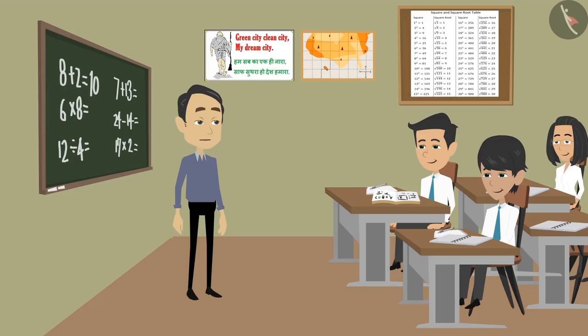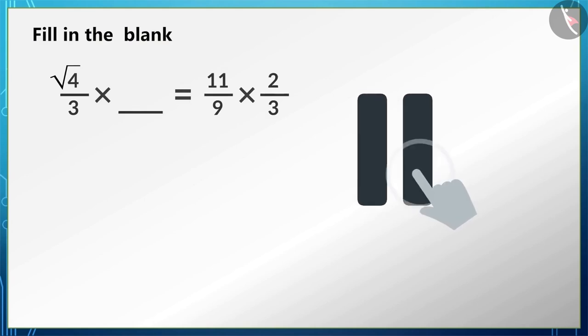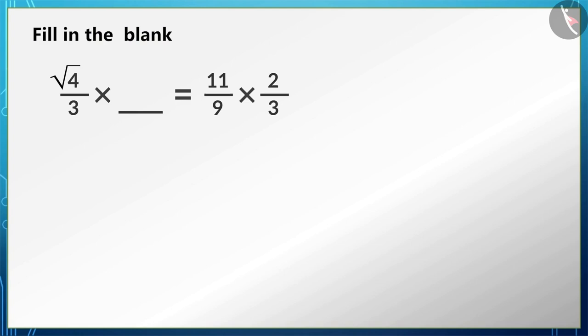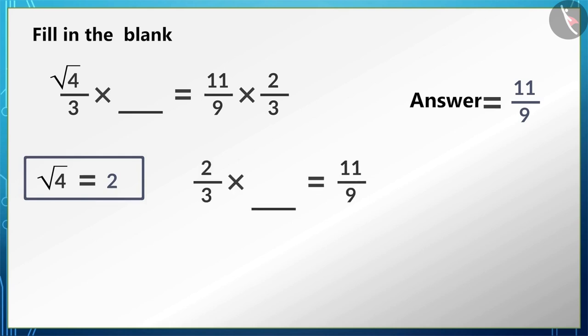Children, now fill in the blanks. All of you try solving this question. Sir, the answer to this question is 11/9. How did you get that, Mohan? Sir, in this question we have to find a number that when multiplied by the square root of 4/3 gives an answer equal to the product of 11/9 and 2/3. The square root of 4 is 2, so we can write it this way.